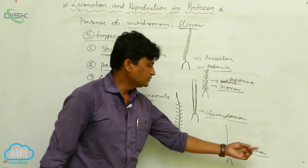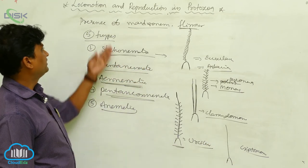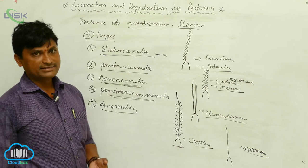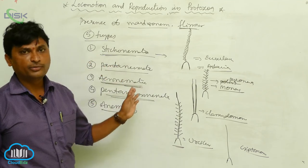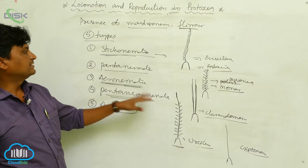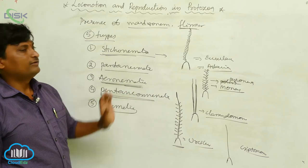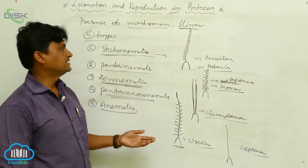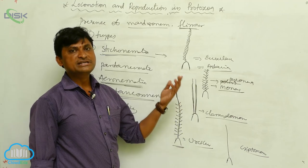Cryptomonas and Chylemonas are the best examples for animatic. This finishes the topic of flagella — pseudopodium, flagella, ultrastructure of flagella, and types of flagella or flagella movement. Next, locomotor organization goes to cilia.